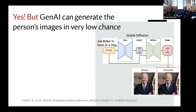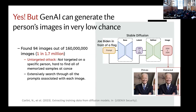But since they are using untargeted data extraction, the result they produce is that GenAI can generate a person's image in actually very low chance. Specifically, they found about 94 images out of 116 million images in the pre-training set — that is like one private image found in 1.7 million pre-training images. The reason for this low chance is they are using an untargeted attack, not targeted on any domain or specific person. It is hard to find all memorized samples at once, and their extensive search through all prompts and all-pair comparison is also not very efficient.